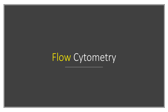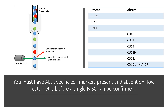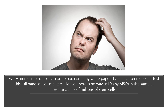Let's first look at flow cytometry. You have to have all specific cell surface markers — either present or absent — in specific subsets to confirm a single mesenchymal stem cell. Flow cytometry works by passing cells one by one past a laser light source and fluorescence, so you see the markers present that need to be there and the ones absent that need to not be there. Every amniotic or umbilical cord company white paper I've seen doesn't test this full panel of cell markers. Hence, there's no way to identify a single mesenchymal stem cell in the sample, let alone millions of stem cells.